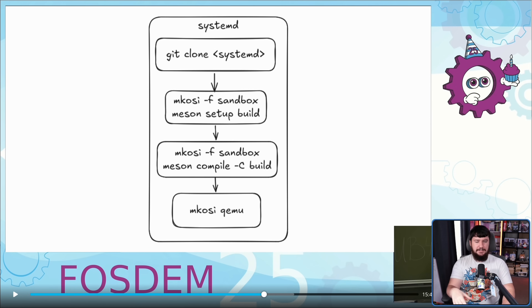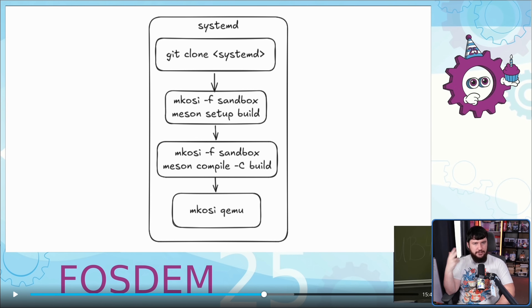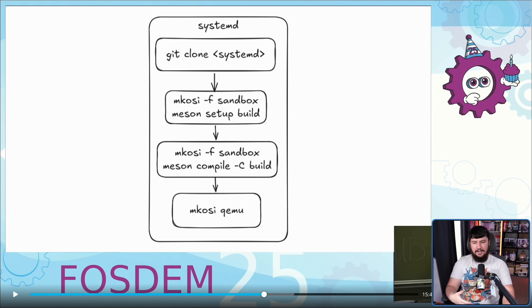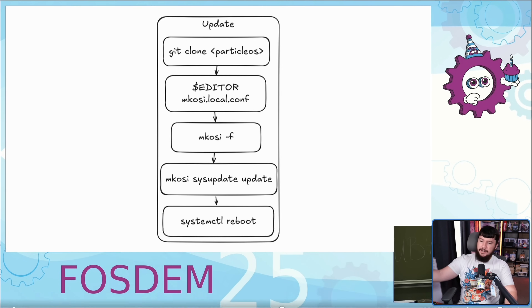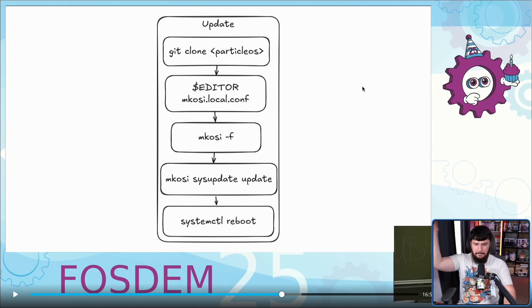Now, if you're developing Systemd, you can't exactly just change out Systemd, regenerate the entire image, and do that for development — it takes a long time and is a big waste of time. Normally what people would do is use some sort of OCI-based container approach and do it like that. Now, Lennart is not a fan of OCI, so instead it's basically using Mkosi to create a little sandbox environment to develop the latest version of Systemd you pull down with Git. The update process is very similar to the pre-deployment: you pull down ParticleOS, configure it as you need to, run a couple of Mkosi commands, reboot, and you're good to go.